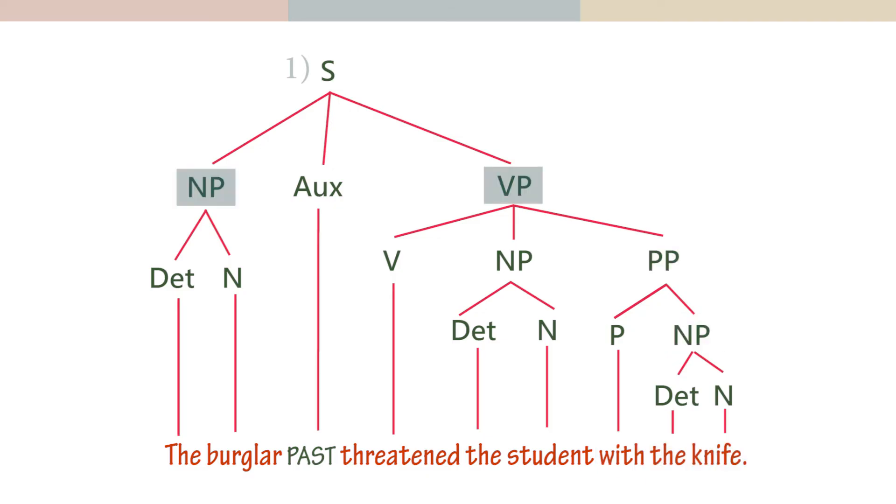First, there is an intermediary level at which the knife goes with the verb. Then the verb goes with the agent or the subject. And the subject is a noun phrase.